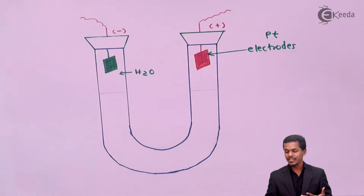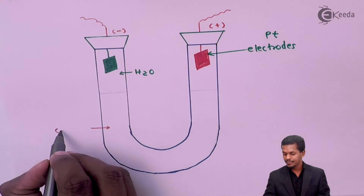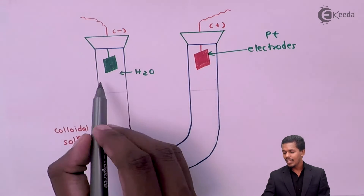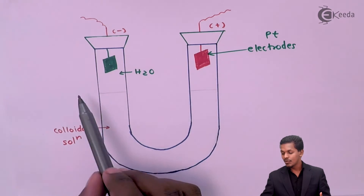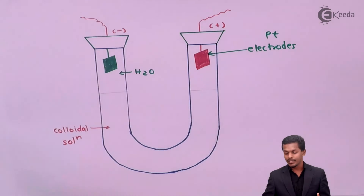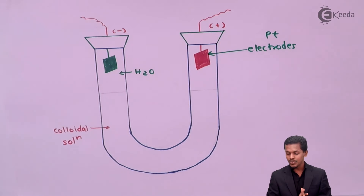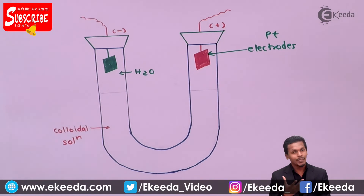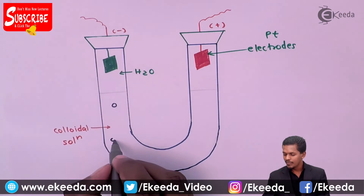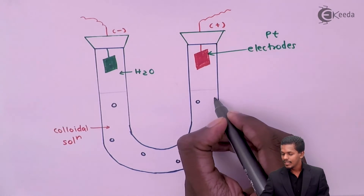I referred to these as platinum electrodes because platinum is an inert electrode. We can see the colloidal solution particles present. The water level on both sides is the same, and the level of the colloidal solution is also the same. I apply a high voltage, so one electrode acquires positive charge and the other acquires negative charge. The colloidal particles — the dispersed phase — can be positive or negative.